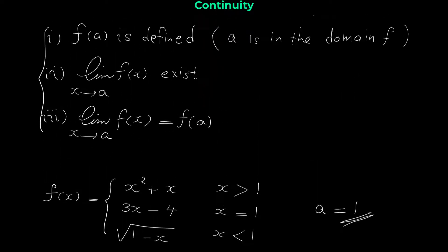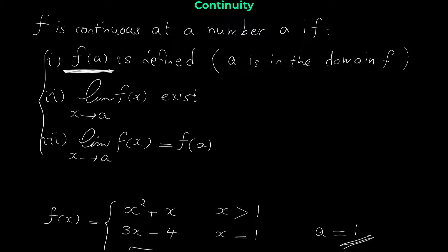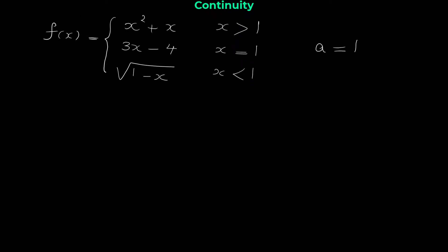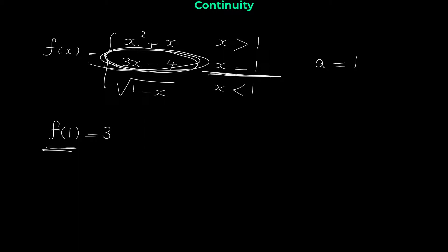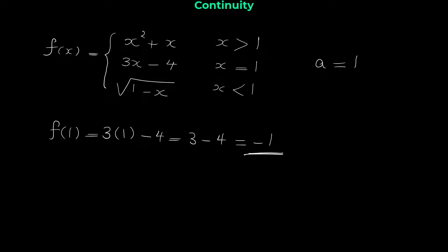From the definition of continuity, first we check if f of a — which here is f of 1 — is defined or not. When x equals 1, we use the second rule: f of 1 = 3(1) − 4 = 3 − 4 = −1. So f of 1 is defined and equals −1, satisfying the first condition of continuity.